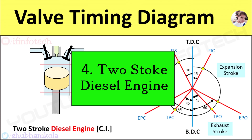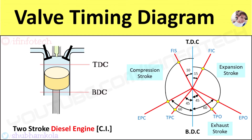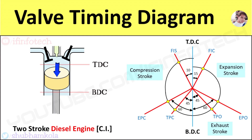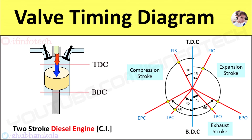Now we discuss the valve timing diagram for the two-stroke diesel engine. In this cycle, before the expansion stroke, at 10 degrees before TDC, the inlet valve opens. Fresh air enters from the inlet port, and the inlet port closes at 15 degrees after TDC. The fuel is injected in the form of a very fine spray into the engine cylinder, which gets ignited due to the high temperature of the compressed air.